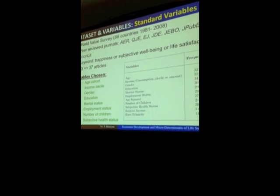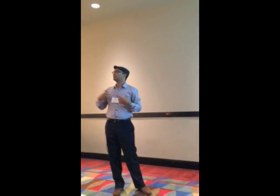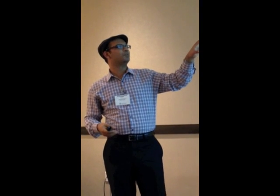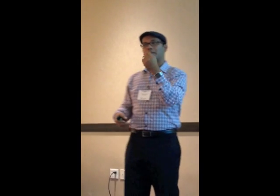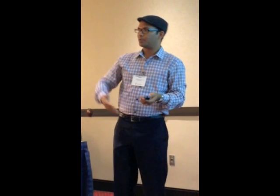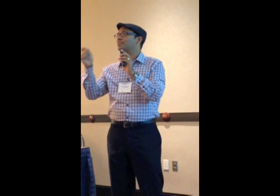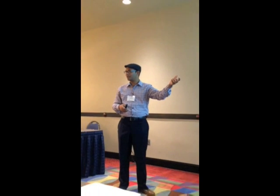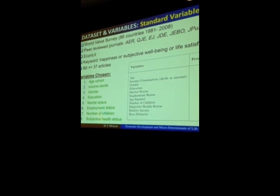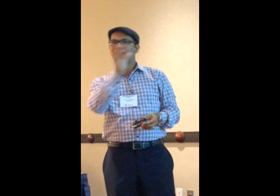We use the World Value Survey, covering about 86 countries. Data is from 1981 to 2008. We do not have panel data — this is pooled cross-sections, where every year it's a random group of people. To choose our standard variables, we didn't just say we think these are standard. We did a keyword search of 'happiness,' 'subjective well-being,' or 'life satisfaction' on Econlit. A bunch of papers came in, and we looked for those that ran life satisfaction or happiness regressions, then looked at all the variables they were controlling for. We had to limit it to a set of journal articles — only that many students work for me on this project.